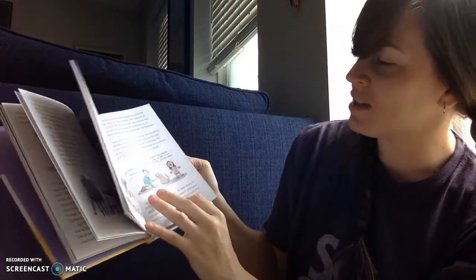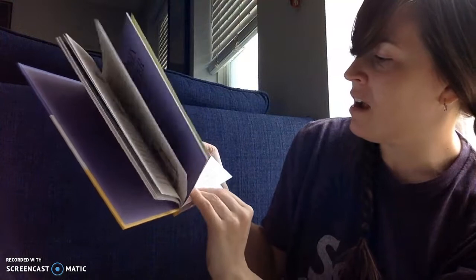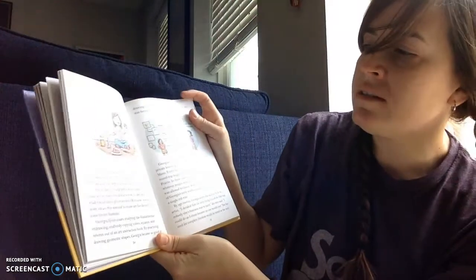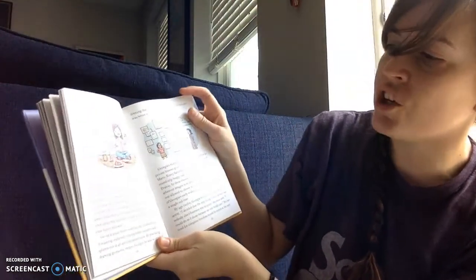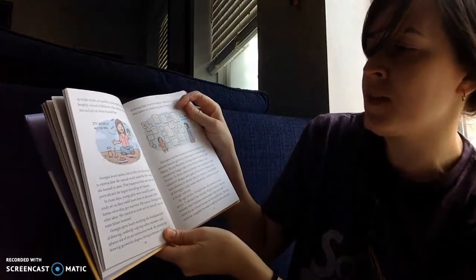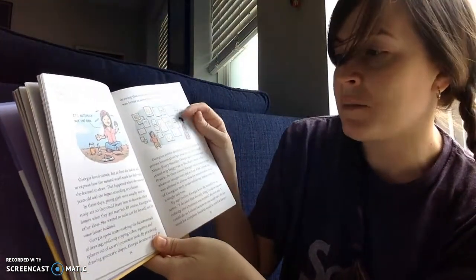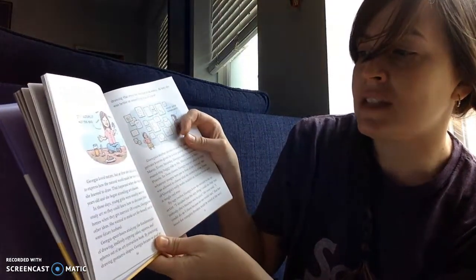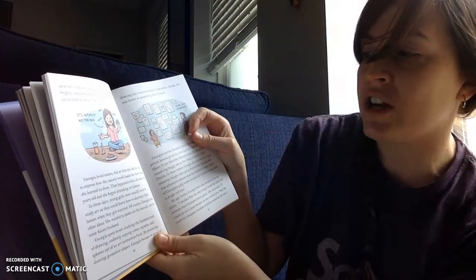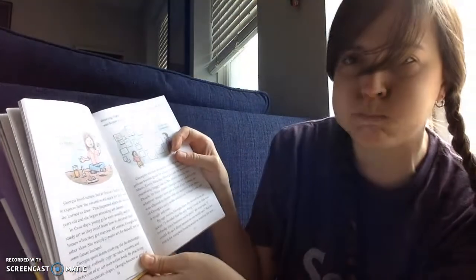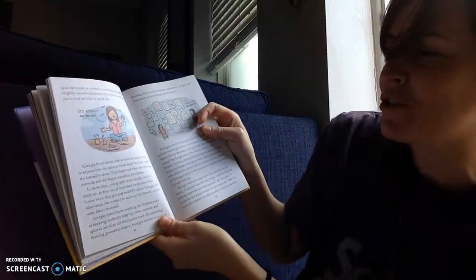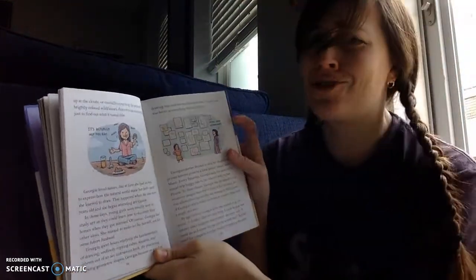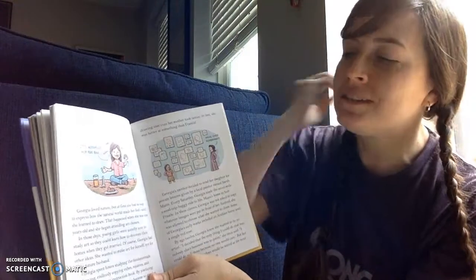That's funny to read about Georgia's interest as a little girl in drawing flowers and looking up at the clouds, as that's a lot of her subject matter as we know. Georgia loved nature, but at first she had no way to express how the natural world made her feel, until she learned to draw. That happened when she was nine years old and she began attending art classes. In those days, young girls were usually sent to study art so they could learn how to decorate their homes when they got married. Of course, Georgia had other ideas. She wanted to make art for herself, not for some future husband.